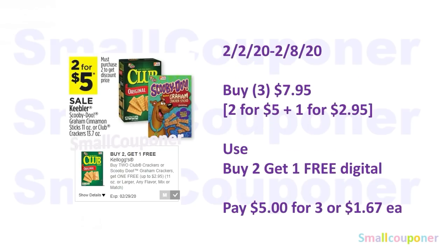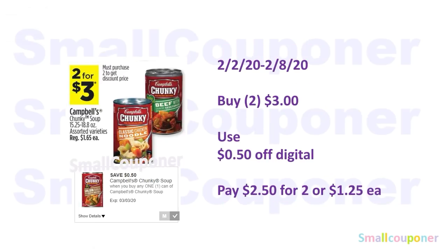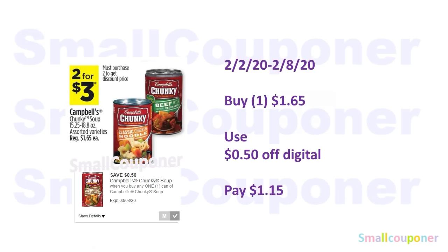The Club Crackers or Scooby-Doo Graham Crackers are two for $5.00. Buy three for $7.95 — two of them at $5.00 and one at $2.95 — because you must buy two to get the discount price. Use the Buy Two Get One Free digital and pay $5.00 for three or $1.67 each. The Campbell's Chunky Soup is two for $3.00; use the $0.50 off digital and pay $2.50 for two or $1.25 each. You can also buy just one for $1.65, use the $0.50 off digital, and pay $1.15.